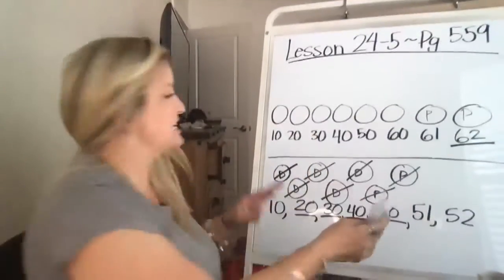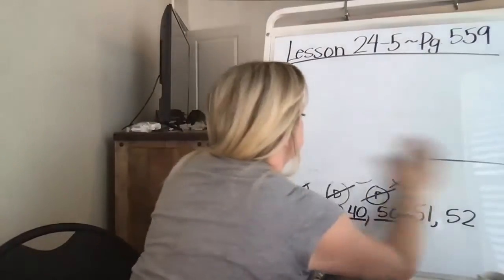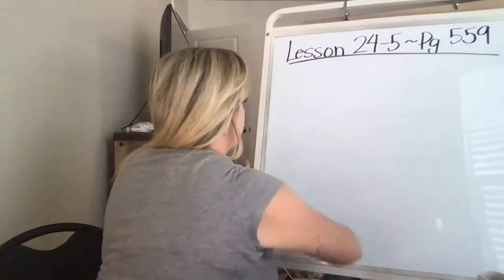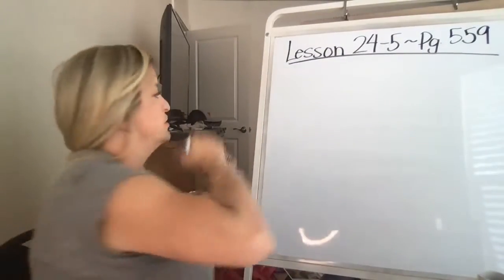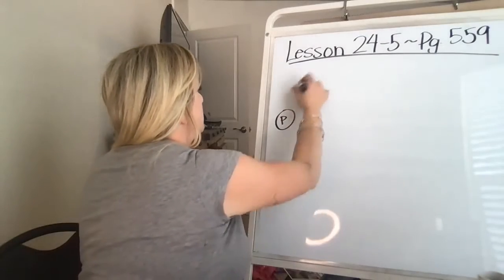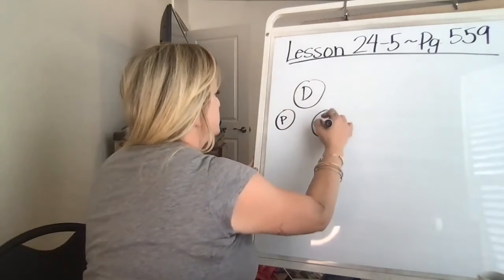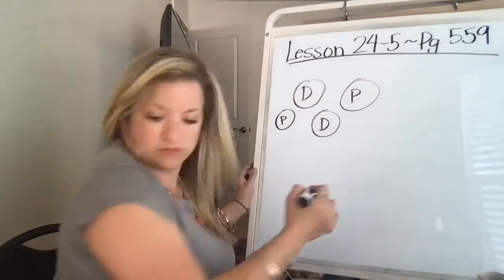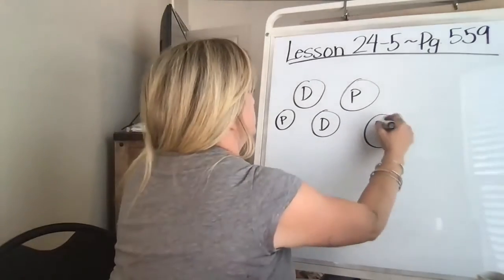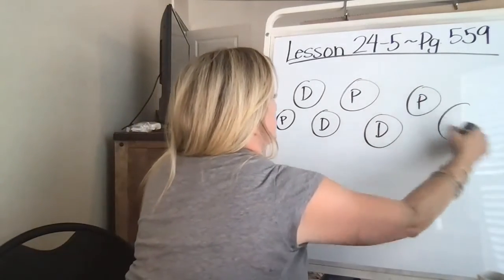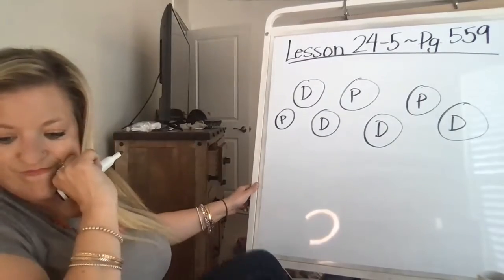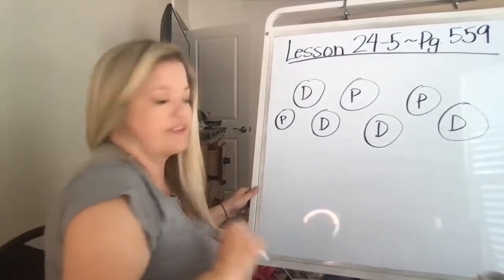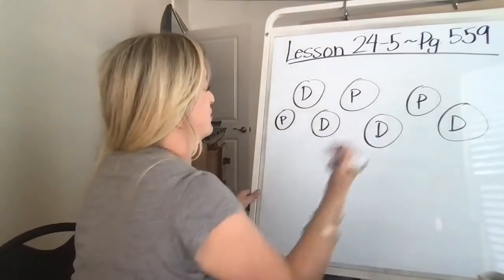Number four on the last page, 560 gives us pennies and dimes. We have to find out how much money we have. So it starts off with a penny, dime, dime, penny, dime, penny. I think we have one more dime. So we have seven coins. 1, 2, 3, 4, 5, 6, 7. Awesome.